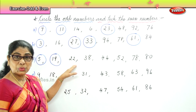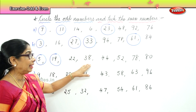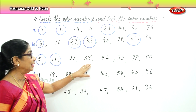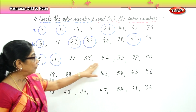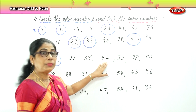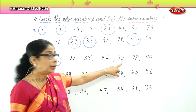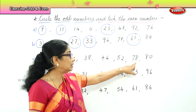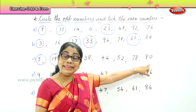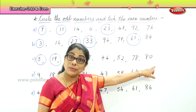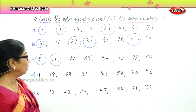Twenty-two ends in two — no. Thirty-eight ends in eight — no. Forty-four — no. Fifty-two ends in two — no. Seventy-eight — no. And eighty ends in zero — that is also not an odd number.